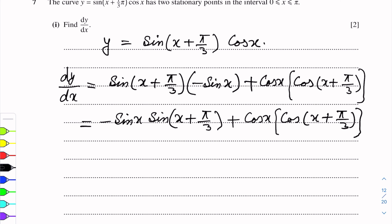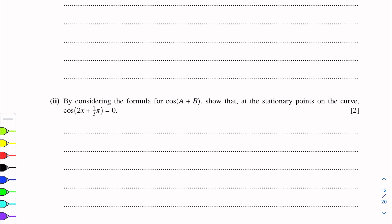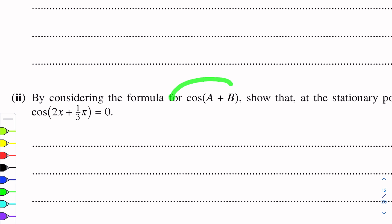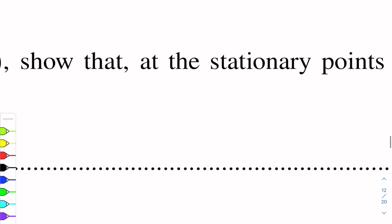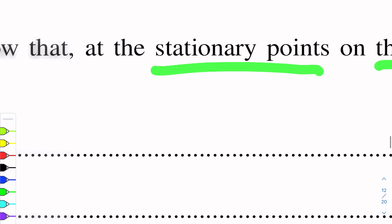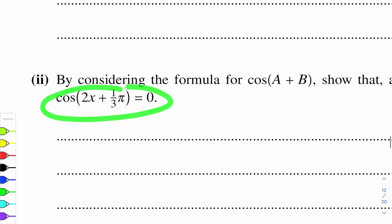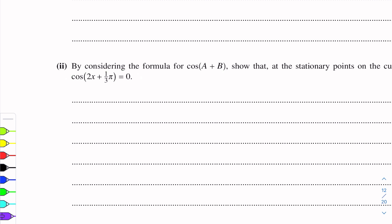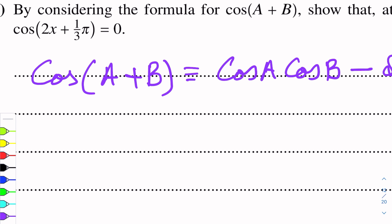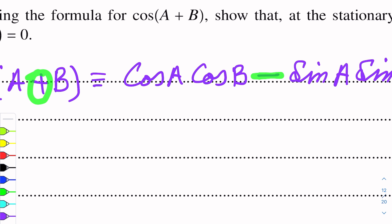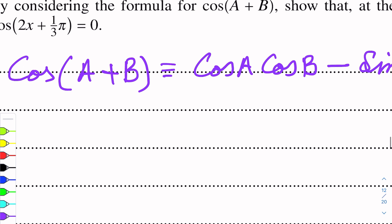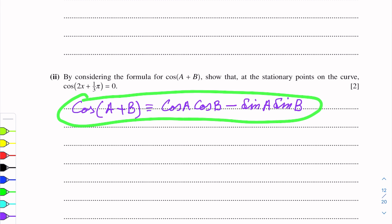The next part asks us to use the formula for cos(A + B) to show a result at stationary points. The formula for cos(A + B) is cos A cos B minus sin A sin B. In the A+B formula there is a minus sign before sin A sin B, and if it were A minus B, it would be plus.